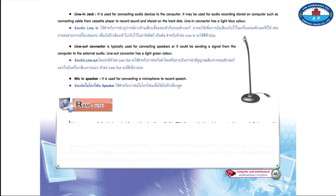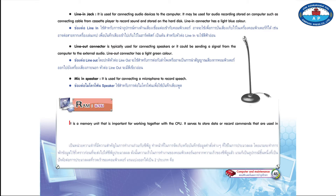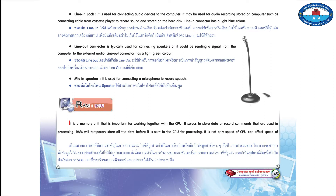RAM is a memory unit that is important for working together with the CPU. It serves to store data or record commands that are used in processing. RAM will temporarily store all the data before it is sent to the CPU for processing. It is not only the speed of the CPU that can affect the speed of computer operation — RAM is also a factor that affects the processing speed of a computer.